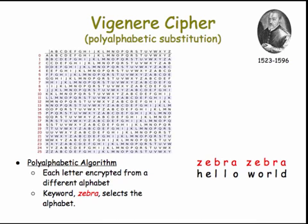Here's how the algorithm works. What you would do is you would use a keyword, like zebra, to identify different alphabets. So zebra would pick out five different alphabets: the Z alphabet, the E alphabet, the B alphabet, R alphabet, and A alphabet.